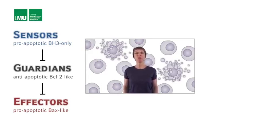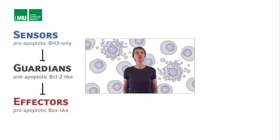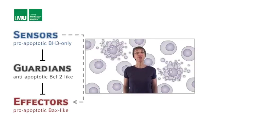The sensors induce apoptosis by binding to and negatively regulating the guardians, thereby blocking the ability of the guardians to inhibit the effectors. Some sensors can also induce apoptosis by directly binding to and activating the effectors. Once active, the effectors induce the processes necessary to irreversibly commit a cell to the apoptotic fate.